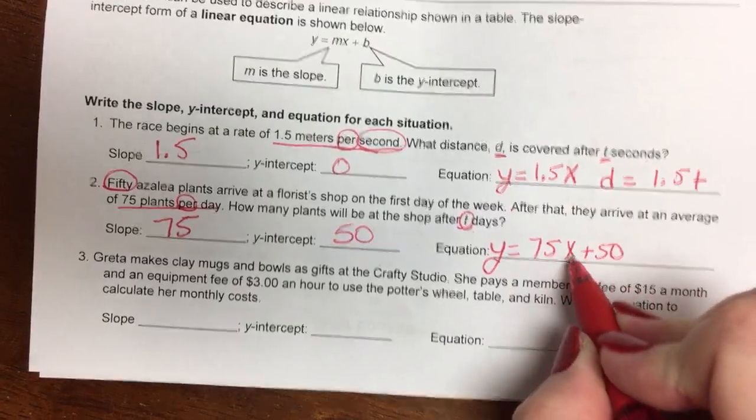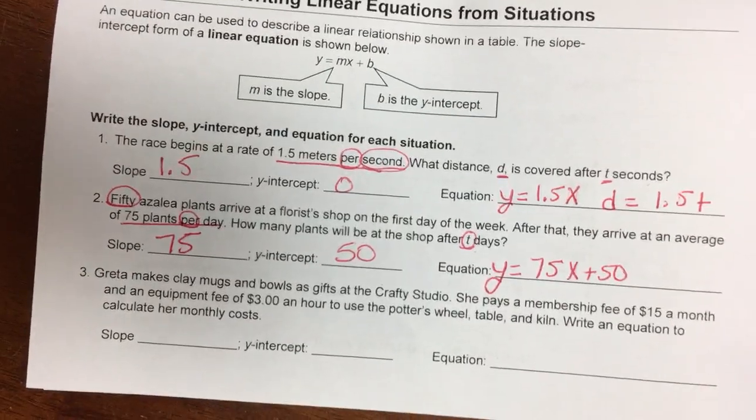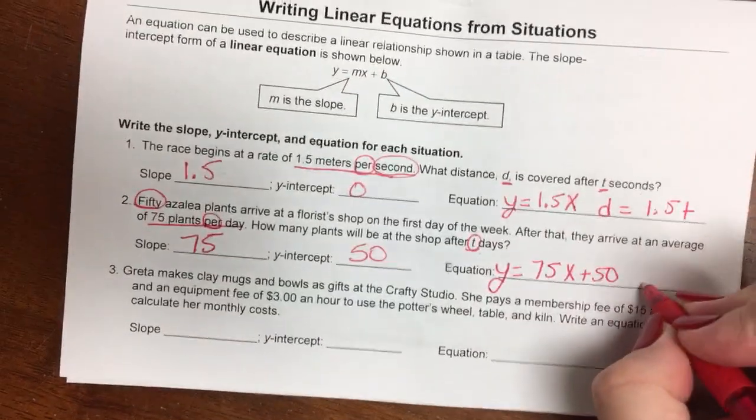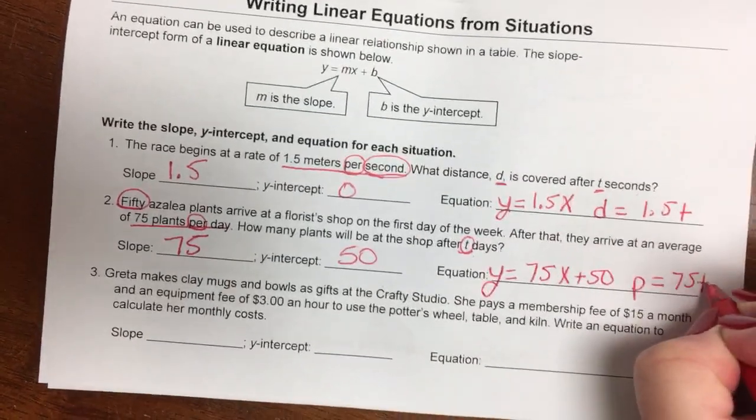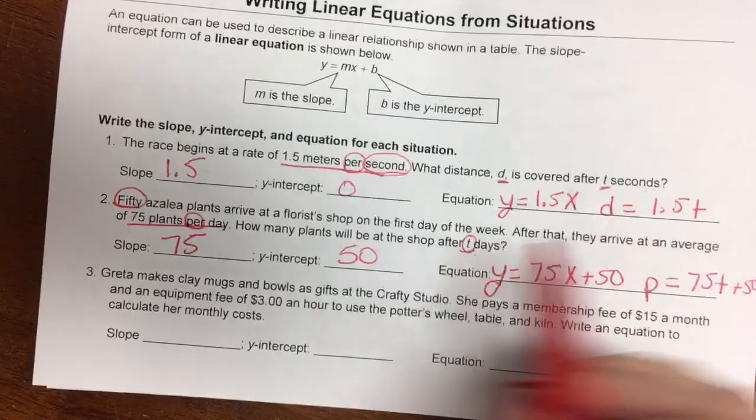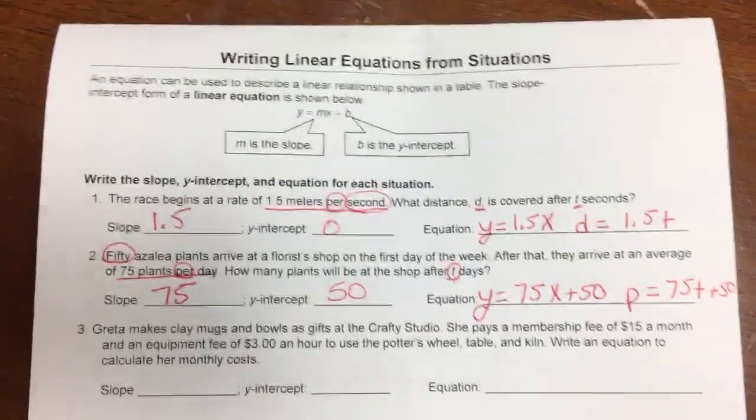So I guess probably p was supposed to be plants. So we'll say p for plants is equal to 75t plus 50 after t days because we're multiplying per day.